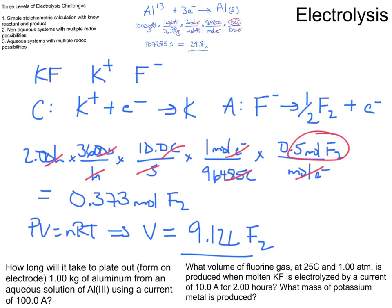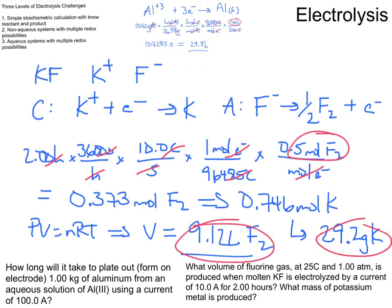So if I have 0.373 moles of fluorine gas, then my moles of potassium is going to be equal to twice the moles of fluorine, which is 0.746 moles of potassium. Then go ahead and multiply that by the molar mass of potassium, which is about 39.1 grams per mole. And we'll see that this tells us we're going to have about 29.2 grams of potassium. So there's my other answer.